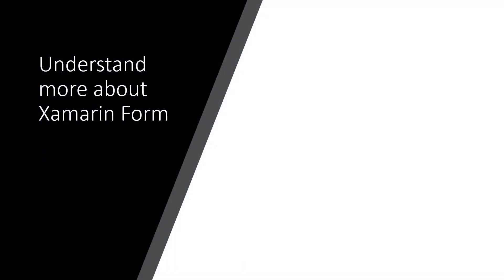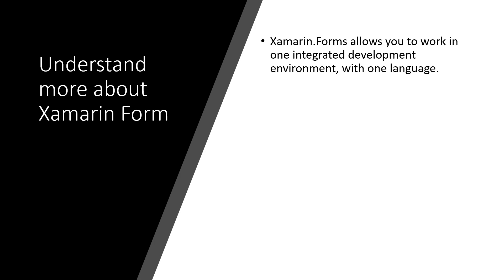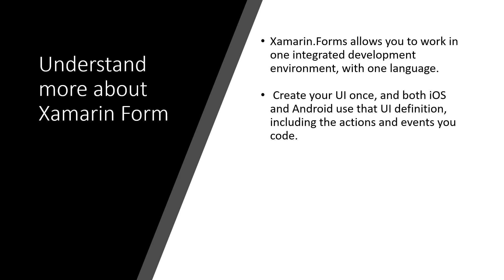The pattern most often used for mobile app development is to develop twice — once for Android and once for iOS. This involves dealing with not only separate SDKs, but altogether different languages and tool sets. Xamarin Forms allows you to work in one integrated development environment with one language. You create your UI once, and both iOS and Android use that UI definition, including the actions and events you code.